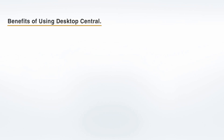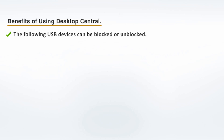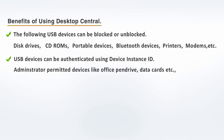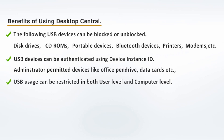Benefits of using Desktop Central: You can secure USB access and customize its use as per your requirement. You can block or unblock the following USB devices — disk drives like USB drives, memory cards, external hard disks, CD-ROMs, portable devices like mobile phones, digital cameras, portable media players, Bluetooth devices, printers, and USB modems. USB devices can be authenticated using the device instance ID, that is the serial number of the device, so that administrator-permitted devices like office pen drives and USB modems can alone be authenticated. USB usage can be restricted at both user level and computer level, so that we can authenticate USB access for specific users or specified computers.